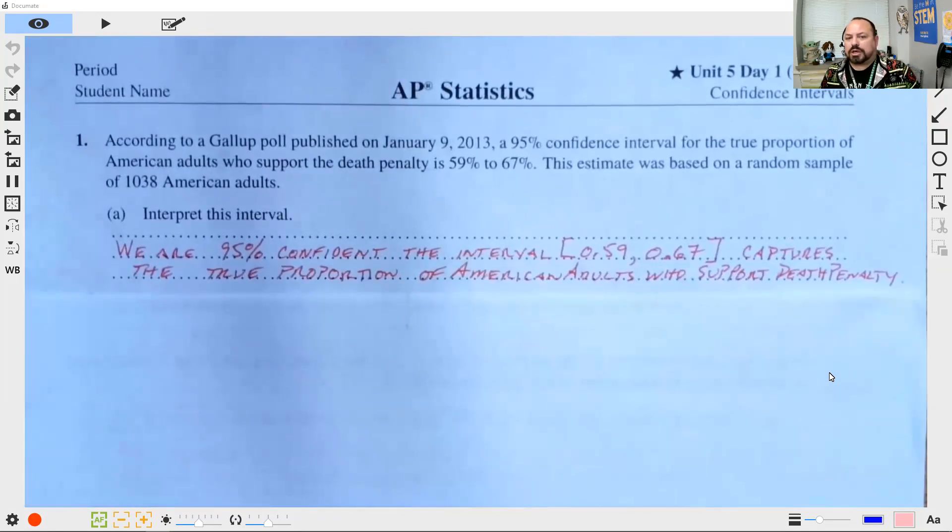So we're not saying there's a 95% chance that the true proportion is in the interval, but rather that we are 95% confident that the interval captures the true proportion. And this is because of how the confidence intervals get built, which is based on the sampling distribution of the sample mean.